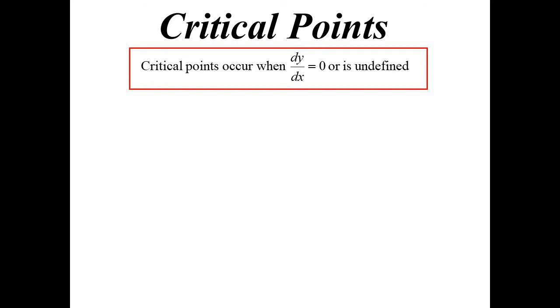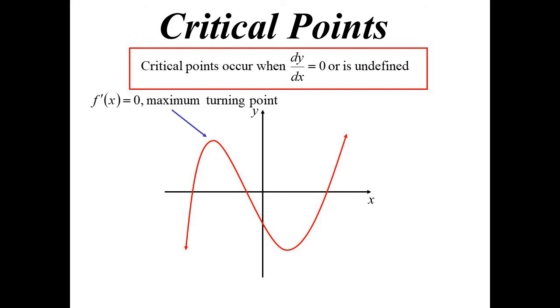So let's look at some examples. Here's a standard polynomial. On this one here, we have a critical point, that one would be a maximum turning point, and then we also have a minimum turning point. They're both when the derivative is equal to zero.